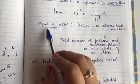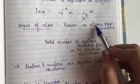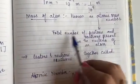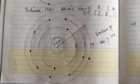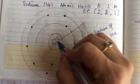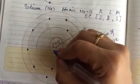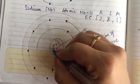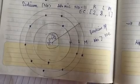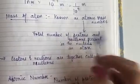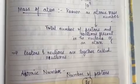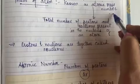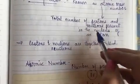Now, what do we call the weight of an atom? The mass of an atom is known as its atomic mass number. Atomic mass number is the total number of protons and neutrons present in the nucleus of an atom. For example, sodium has atomic number 11, meaning it has 11 protons, and suppose it has 12 neutrons. So 11 plus 12 equals 23 — which means the atomic mass number of sodium is 23.